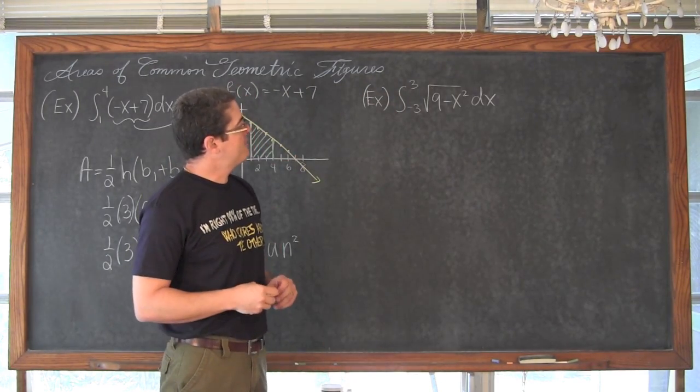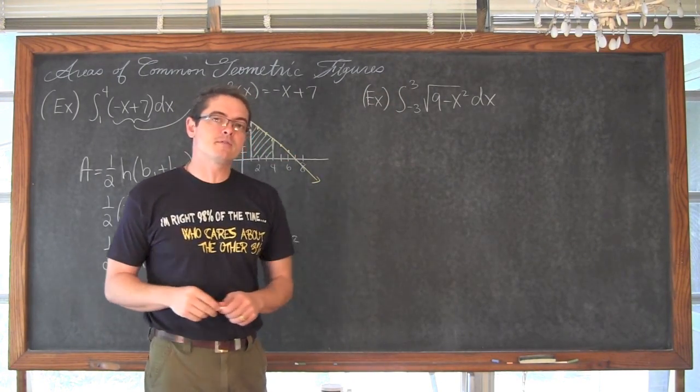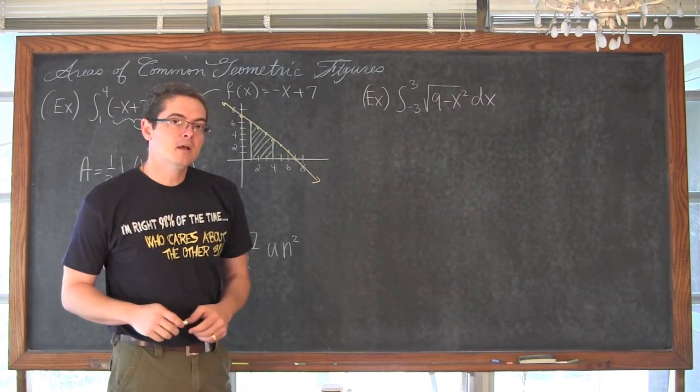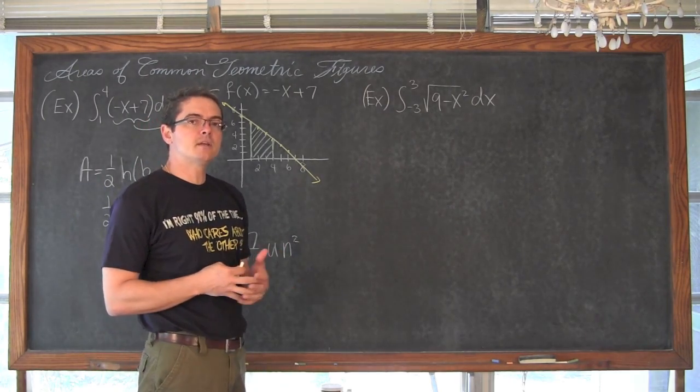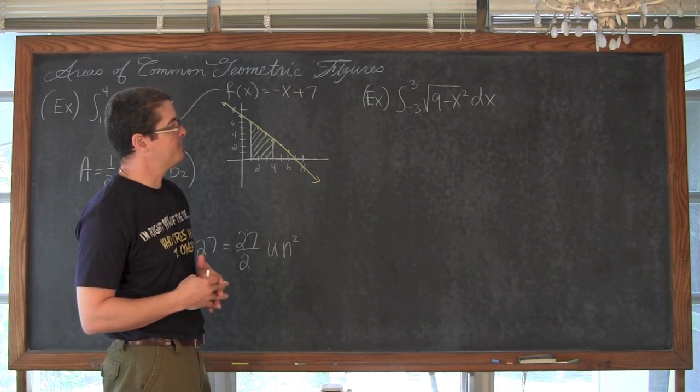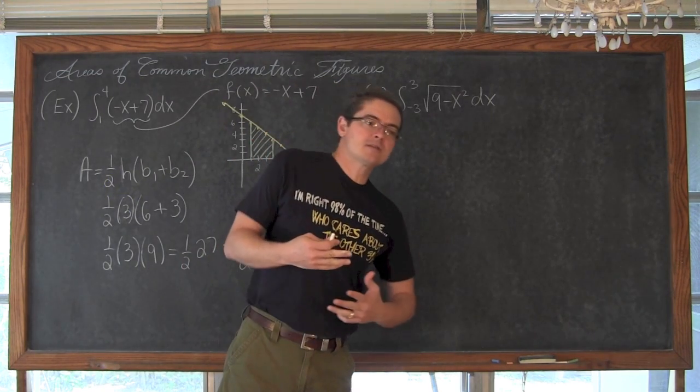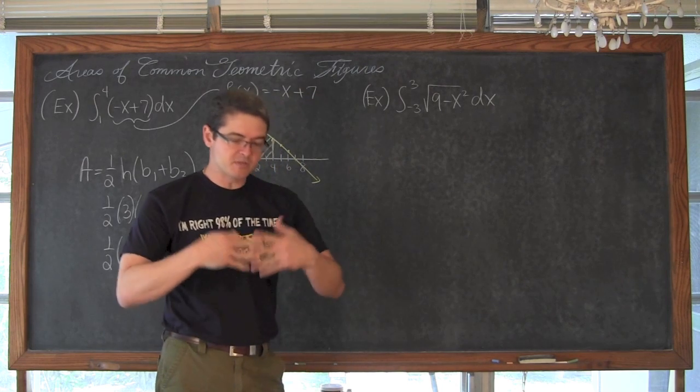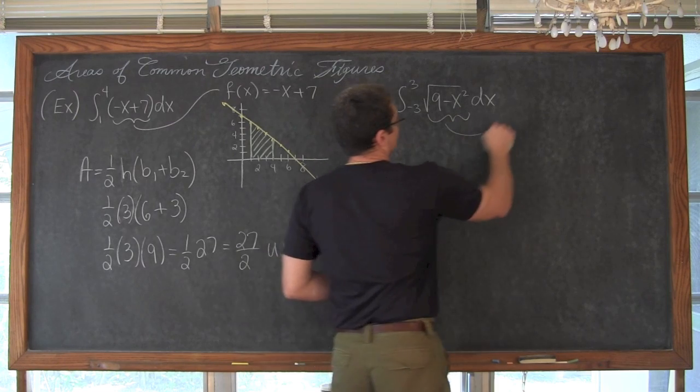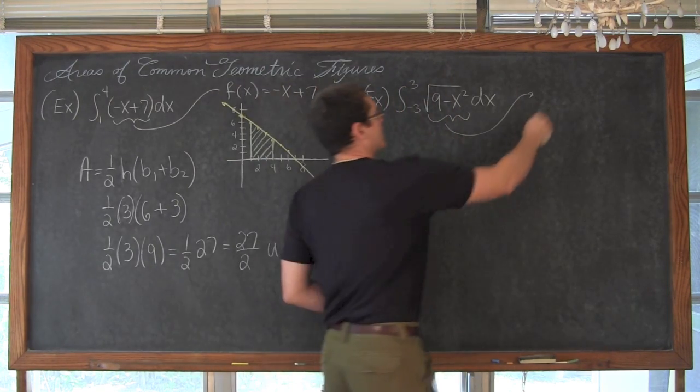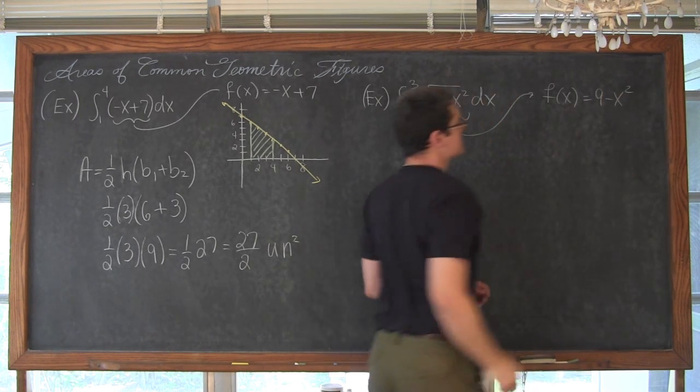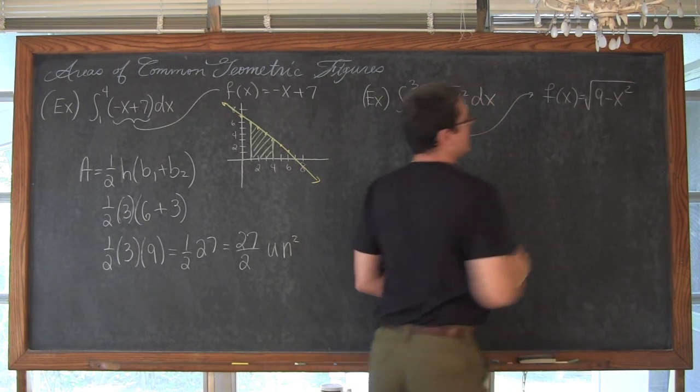Over here we have the definite integral of the square root of 9 minus x squared dx from the boundary of negative 3 and 3. So this might look like a question that you need to go through the limit process or definition of area, the Riemann sum, whatever your teacher is calling it. Definition of area is just a specialized case, or a specific case of Riemann sum. So if we take this out again, remembering that we are taking the integral of a function, we have f(x) equals the square root of 9 minus x squared.